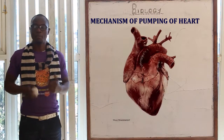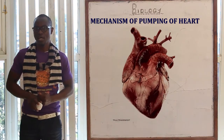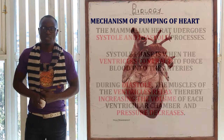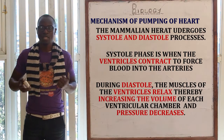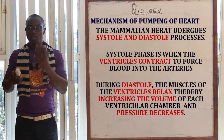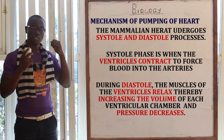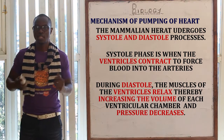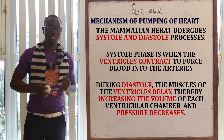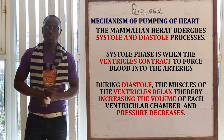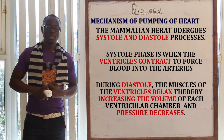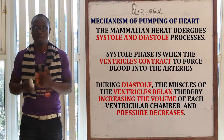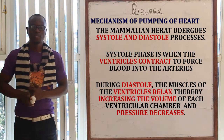Let's now look at the pumping mechanism of the heart. How does the heart pump? The mammalian heart mainly undergoes two main processes: the first process is called systole and the next process is called diastole. During the systole phase, the ventricles contract to force blood into the arteries from the heart.